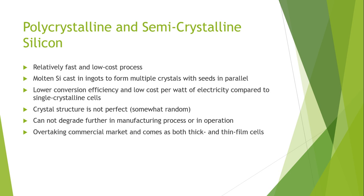Polysilicon consists of small crystals, also known as crystallites, giving the material its typical metal flake effect. While polysilicon and multisilicon are often used as synonyms, multicrystalline usually refers to crystals which have a structure larger than 1 mm.